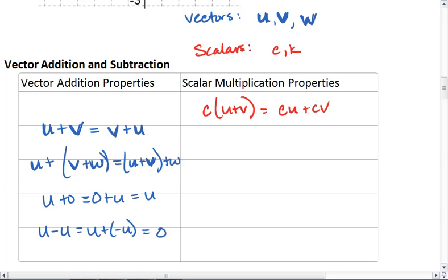Let's say we were to use two scalars together. We were to scale u by c and then add it to scaling u by k. This is the same as adding our two scalars together and then scaling vector u. Also, if we were to scale u by k first and then scale it by c, this is the same thing as multiplying k and c together and then scaling u by that factor.